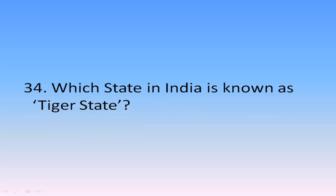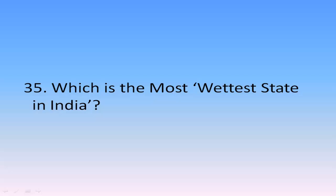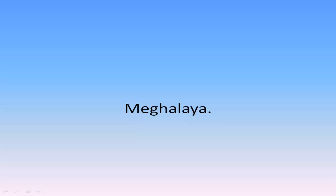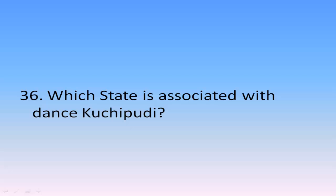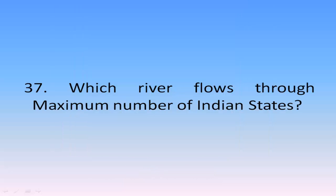Which state is known as the tiger state? Madhya Pradesh — it is called the tiger state as it harbors 19% of India's tiger population and 10% of the world's tiger population. Which is the wettest state in India? Meghalaya. Which state is associated with the dance Kuchipudi? Andhra Pradesh.